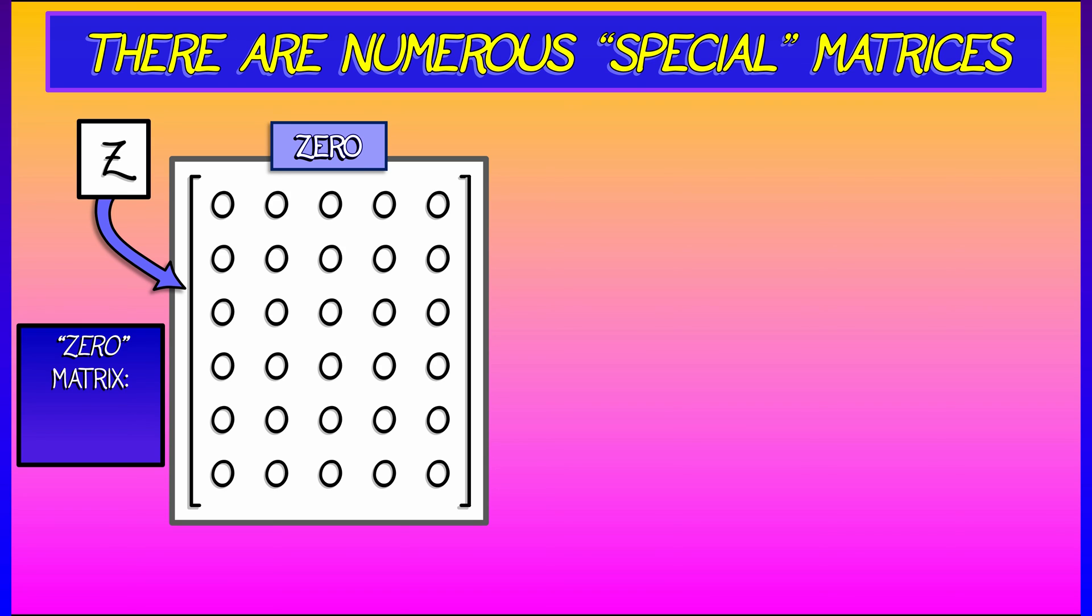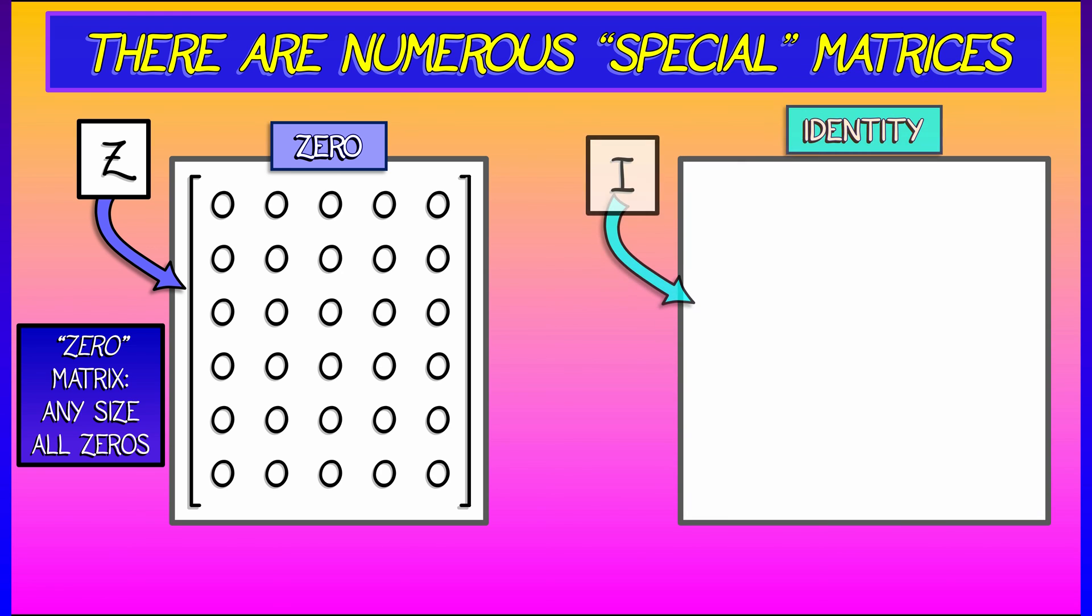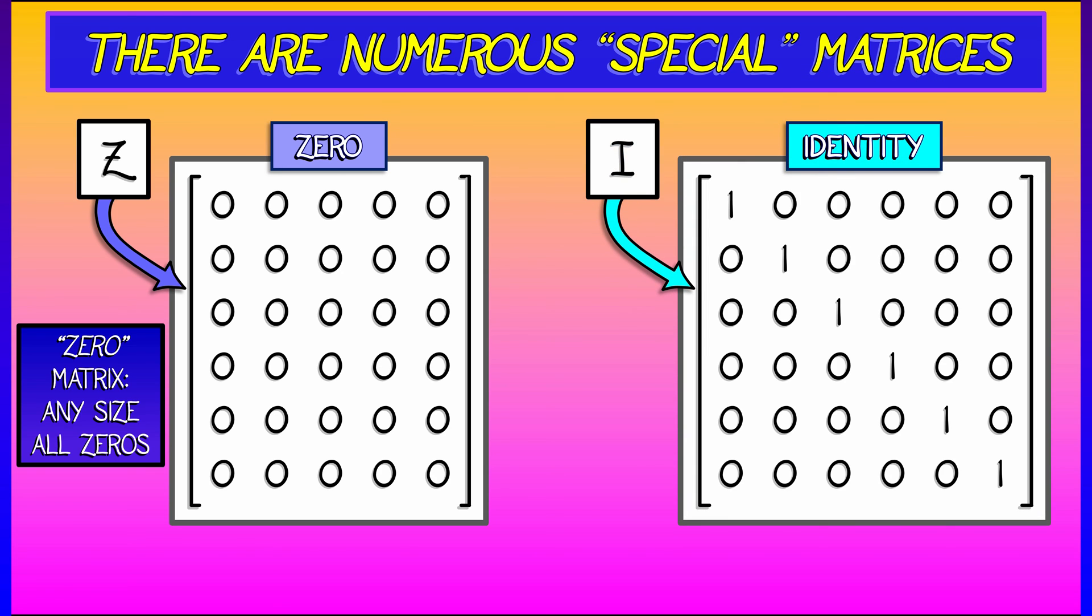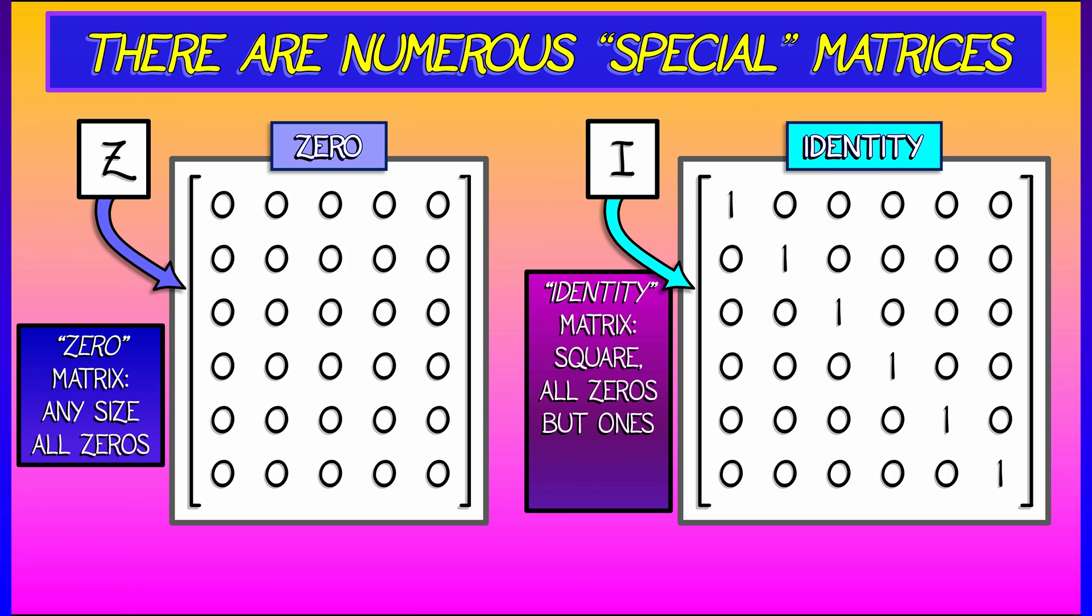Another special matrix is the identity matrix. This is a square matrix, must be square, and must have zeros everywhere except along the diagonal where it has ones. You're going to want to remember these, especially the identity matrix.